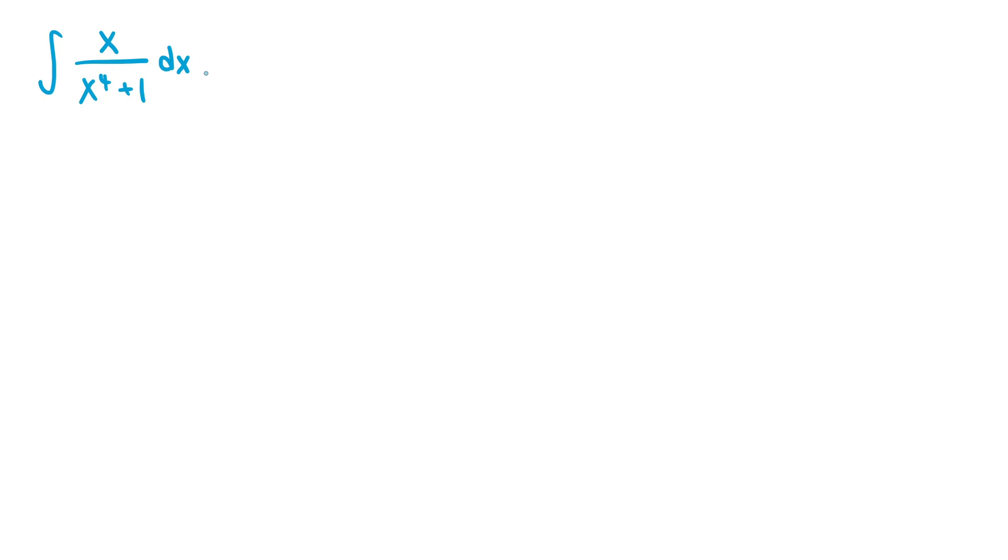This is the same as the x squared plus 1 in the denominator of the derivative of arctan of x. To do the substitution, we need a 2x in the numerator, so we can rewrite the integral as 1 half times the integral of 2x over x to the 4th plus 1 dx by bringing out a constant of 1 half.